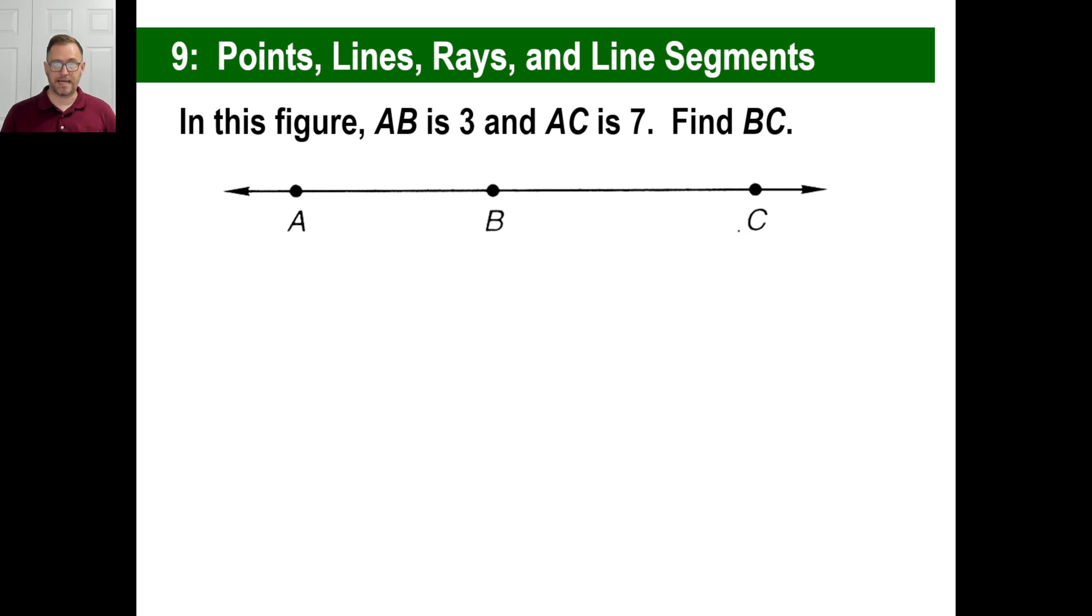Let's say, for example, in this figure, A, B, line segment. I'll say line segment A, B is 3, and A, C is 7. Find B, C. Well, of course, if A, C is 7, and A, B is 3, then B, C has to be 4. There will be little examples like that that you saw in your book.